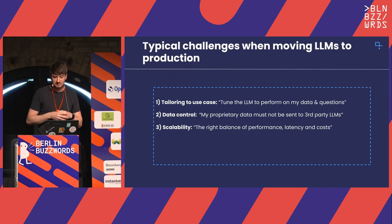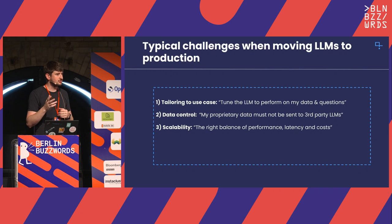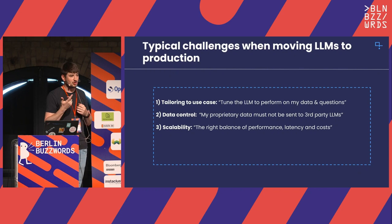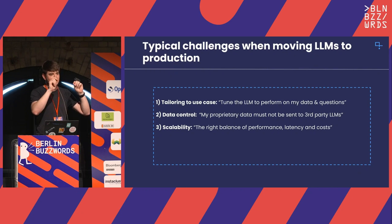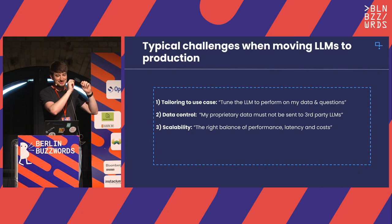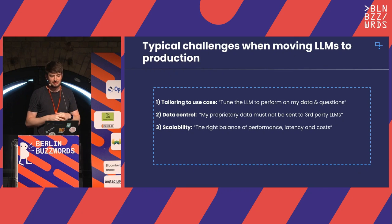Third challenge: once we've covered the first two, it's often about how can we scale — not only in technical terms like latency and throughput, but also in terms of actual costs and model performance. There is really a triangle where you need to find out for your use case what really matters: latency, costs, or model performance. Depending on your use case, the answer might look very different. It's really about finding the right balance.